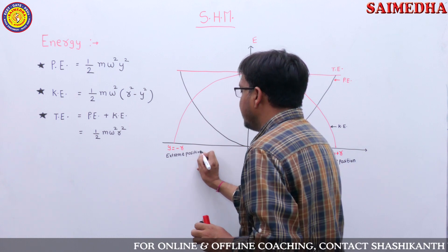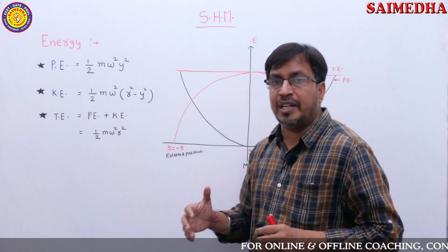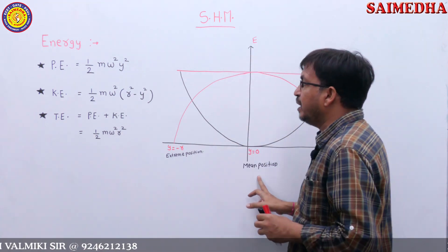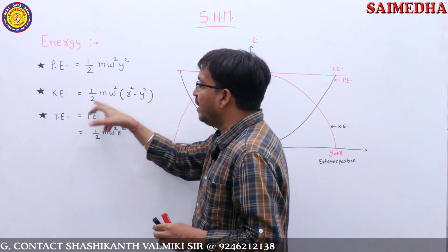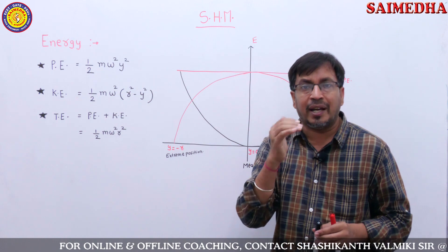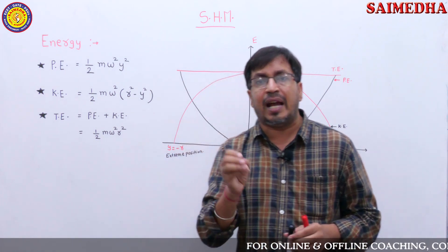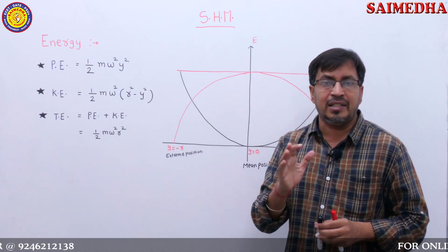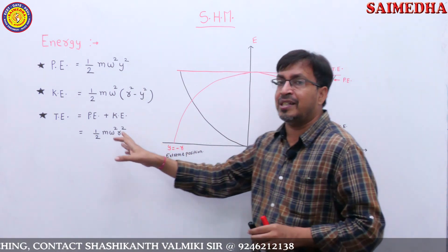At mean position, the condition is y equals 0. If y equals 0, then potential energy is 0 because the y value is 0. Kinetic energy at mean position equals half m omega squared r squared, which is the total energy. So at mean position, potential energy is 0 (minimum) and kinetic energy is maximum, equal to total energy. Remember that point.